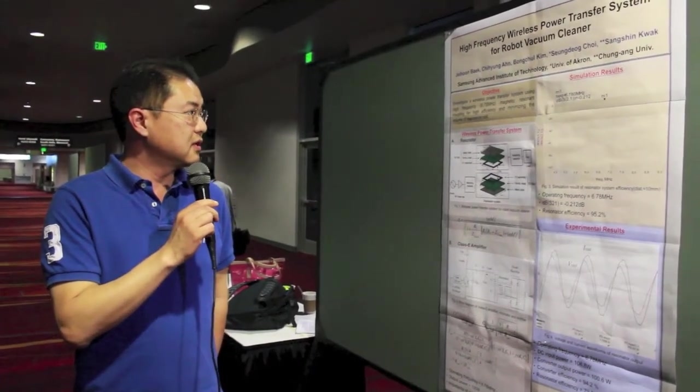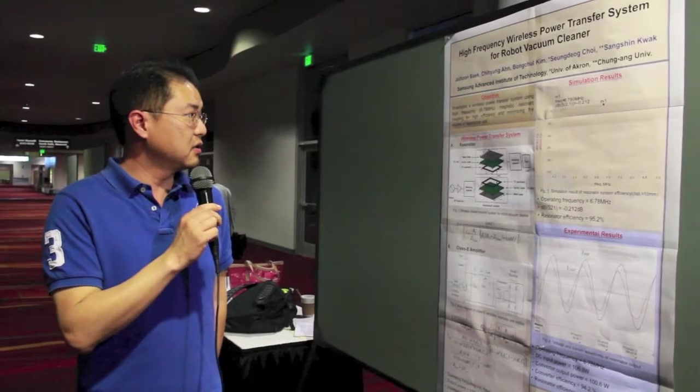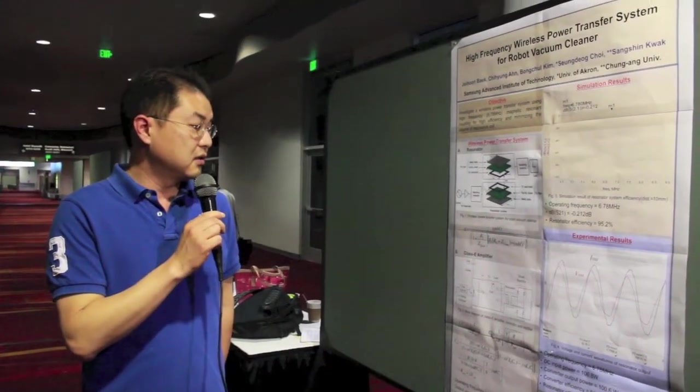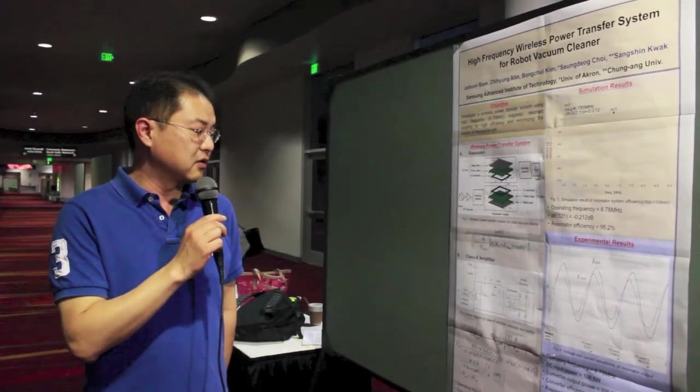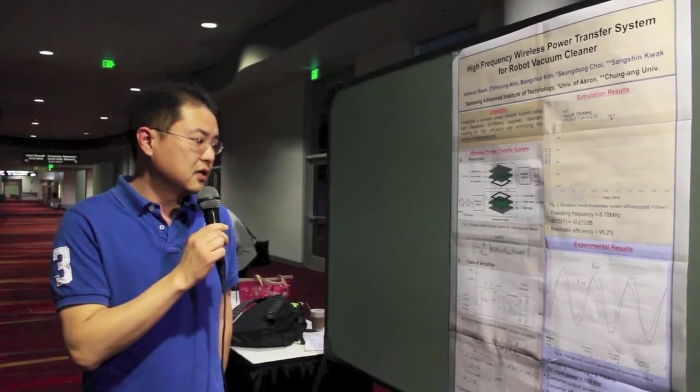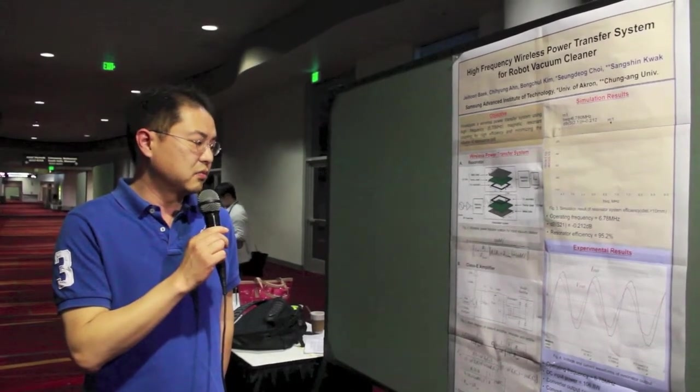This coil-to-coil system includes a resonator and Class E amplifier and achieves 95% efficiency at the resonator and 79% at the system level.